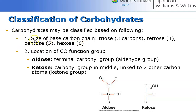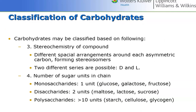Two pentoses you should know off the top of your head are ribose and deoxyribose, which are integral in making your RNA and DNA. For hexoses, we have glucose — very, very common. We know this one inside and out, hopefully by now. If not, you've eaten plenty of them, guaranteed. Carbohydrates also have different ways that they are arranged.